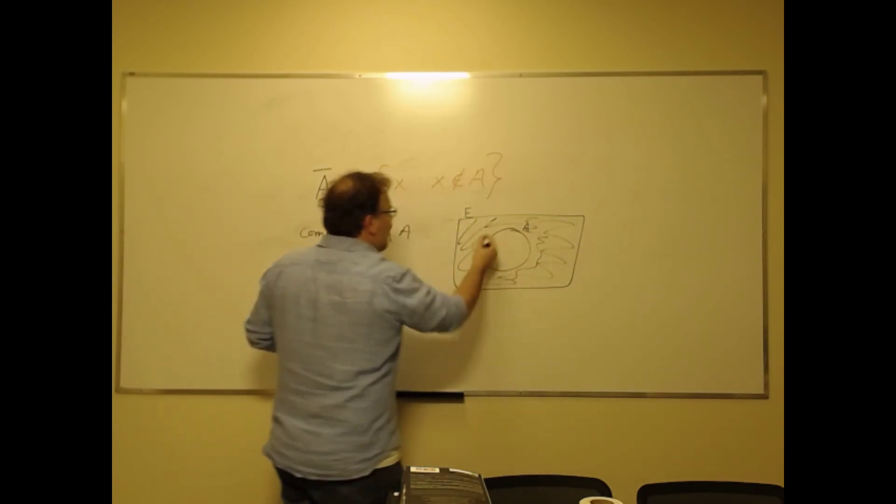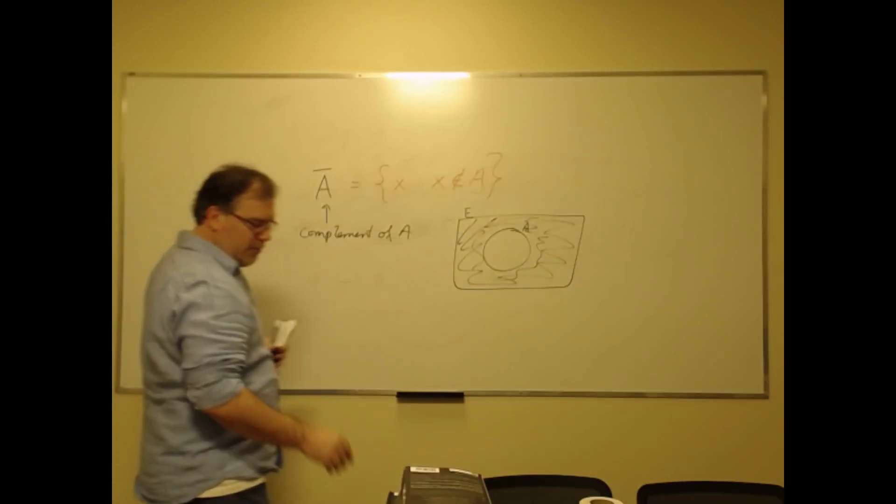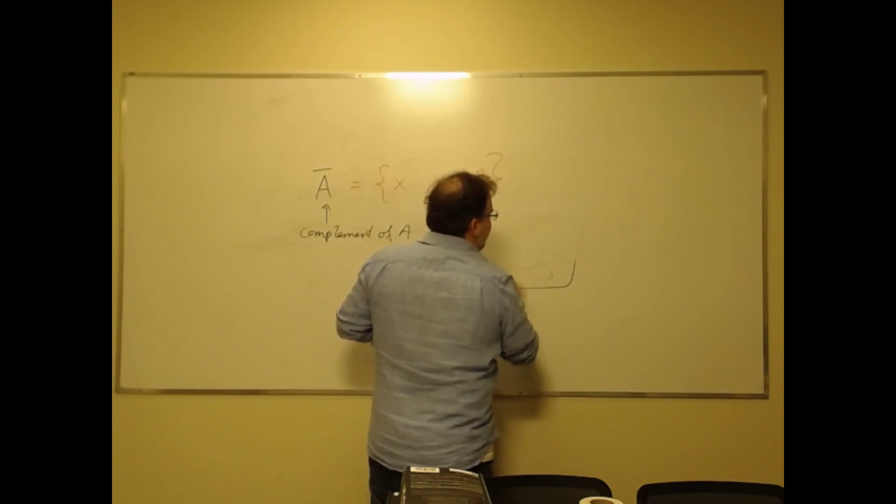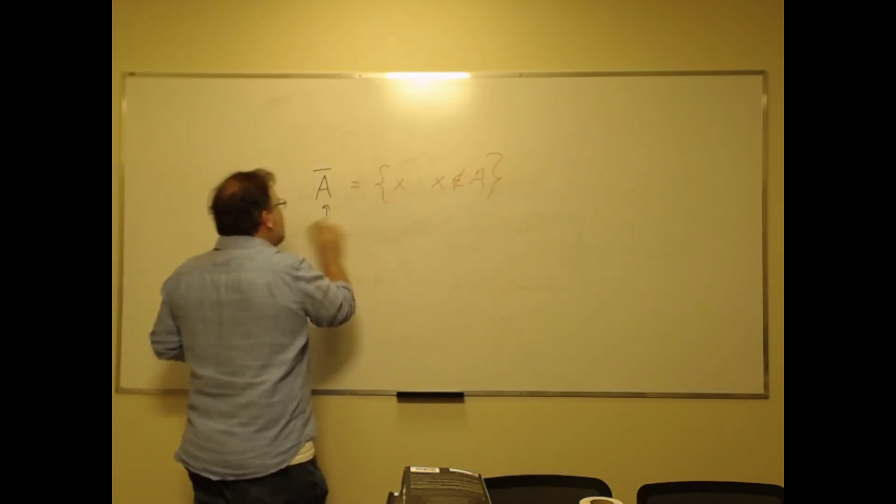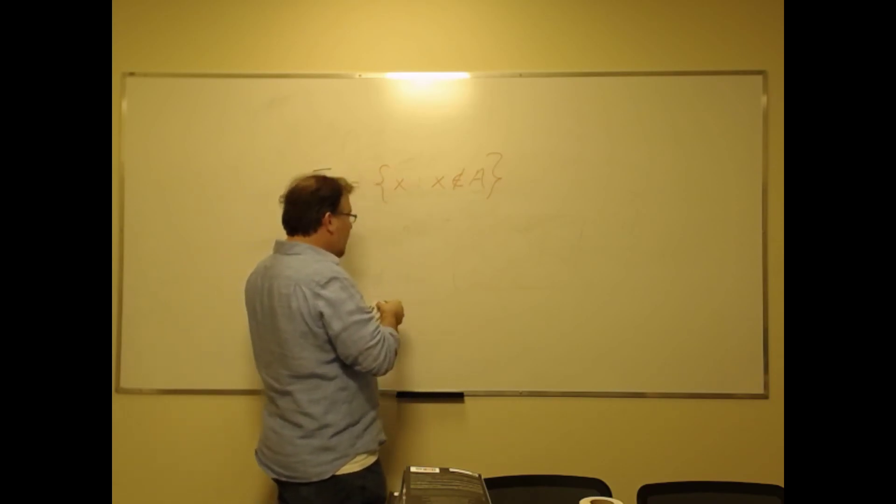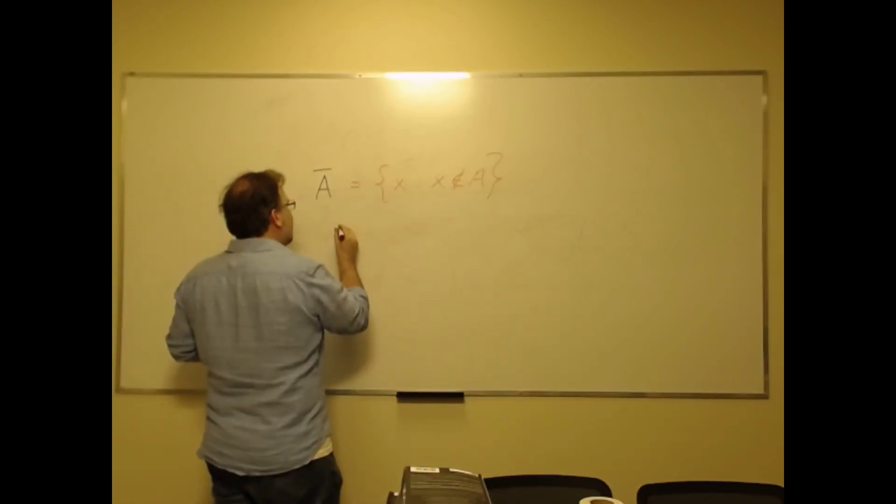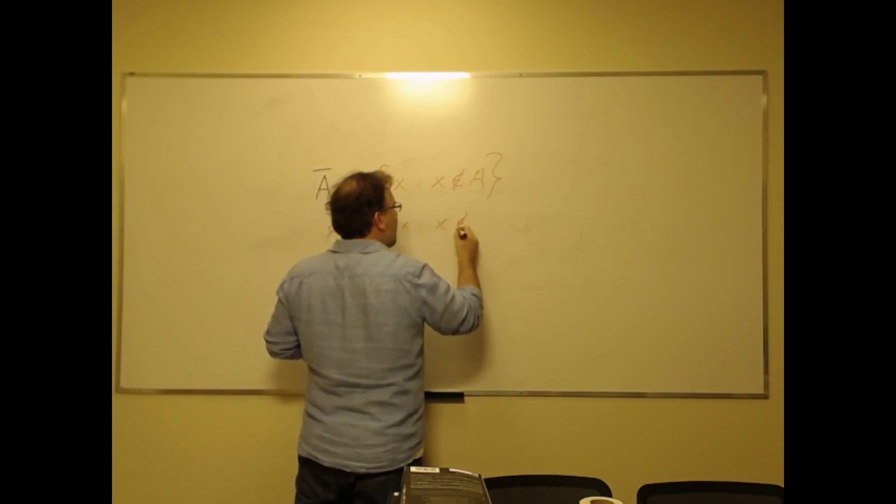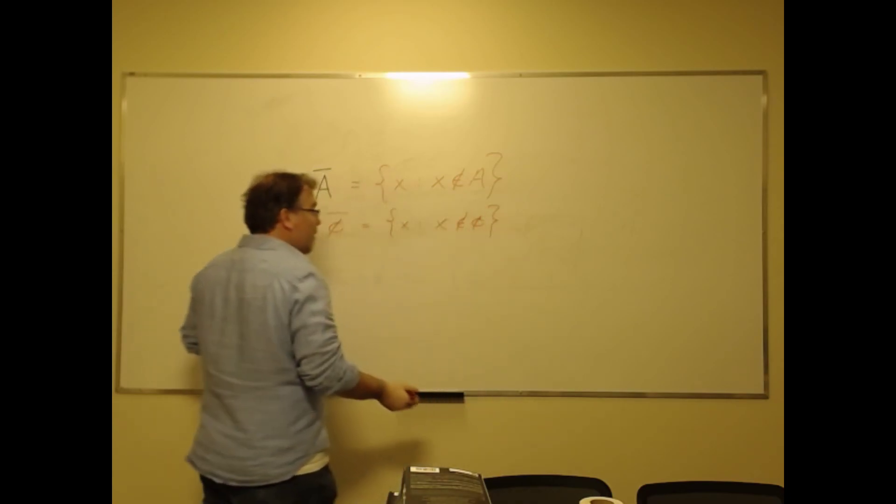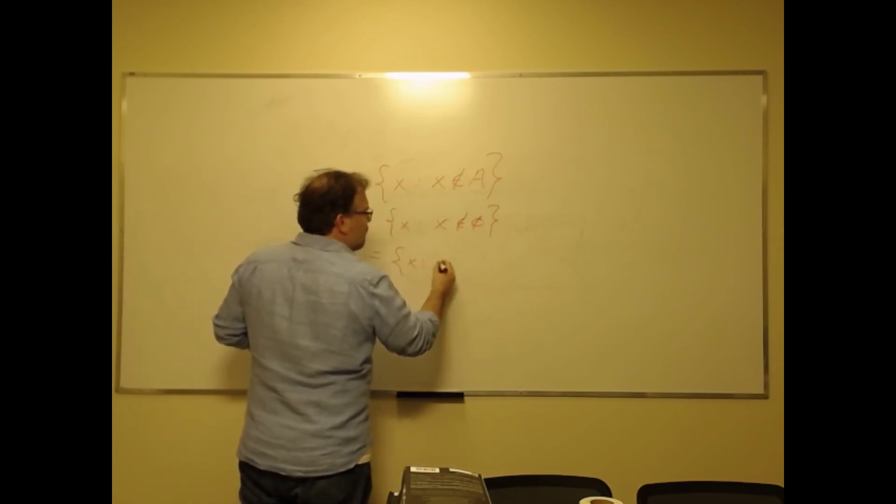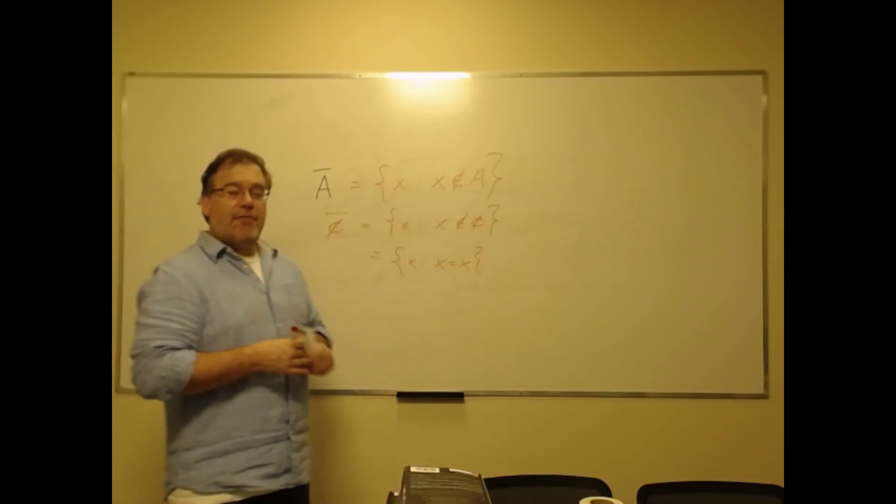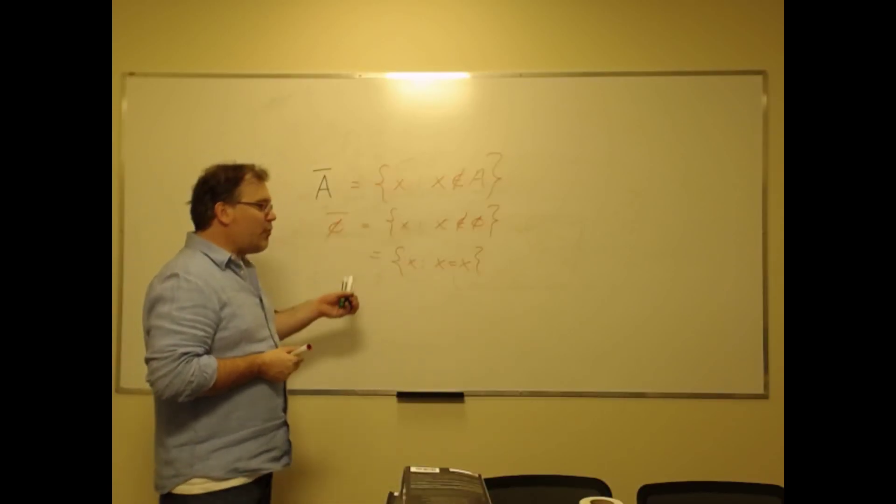Now why is this definition a little bit too loose? Well, because what about the complement of the complement of the empty set? Following that idea, that would be the set of all the objects that are not in the empty set. But that's the same as saying the set of things that are identical to themselves, which includes everything. So again, that would give us a set of all sets.